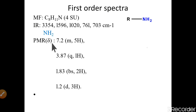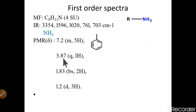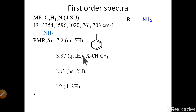From the PMR, the first signal is at 7.2 — a multiplet of 5H. The 7.2 region is for aromatic protons, and 5H as a multiplet indicates a monosubstituted benzene ring. The second signal is at 3.87, a quartet of 1H. This 1H at 3.87 is directly attached to a heteroatom, and the quartet means it is coupled to a CH3 group. Since our only heteroatom is nitrogen, this CH is attached to nitrogen and CH3.